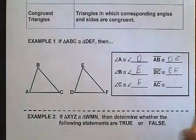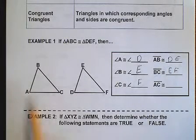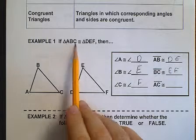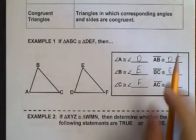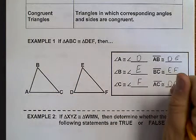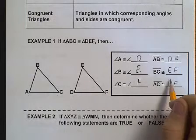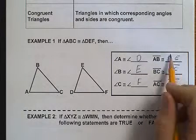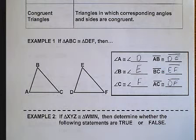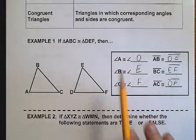And so AC, first and last, would be DF, first and last. And all of these, since they are lines, need lines drawn on top. So the order that we put things in is very important.